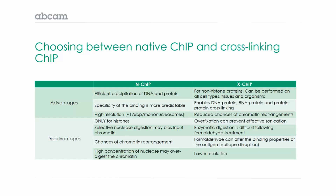Cross-linking ChIP, on the other hand, is much more flexible and can be performed with histone and non-histone proteins on all cell types, tissues, and organisms. In addition to DNA-protein analysis, you can also analyze RNA-protein and higher order protein-protein DNA interactions, and there is a reduced chance of chromatin rearrangements.